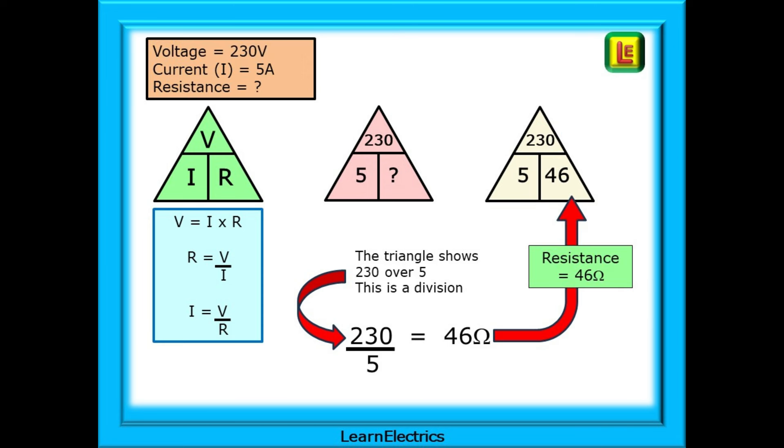Now this one. The voltage is 230 volts and the current is 5 amps. What is the resistance? Fill in what you know into the pink triangle and we have 230 over 5. This is a division, 230 divided by 5. Put the numbers into your calculator and out pops the answer, 46 ohms. Double check. Multiplying the bottom row together equals the top number. Yes, it does. 5 times 46 is 230.